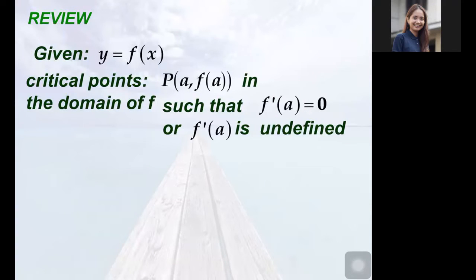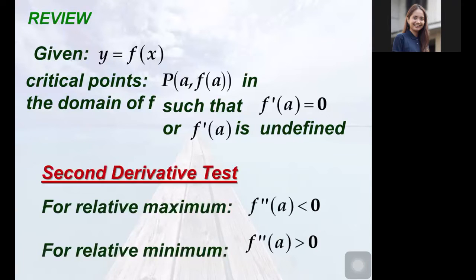We also recall that we use the first derivative to find the critical points — those are the candidate points for which a relative maximum or minimum may exist. The critical points are points on the domain of the function that are zeros of the first derivative or those points for which the first derivative is undefined. Since these critical points are candidates, we must verify if indeed a relative maximum or minimum exists at the point. The tool? A second derivative test. Remember: first derivative to find the critical points, second derivative to evaluate the behavior of the function at the critical points.